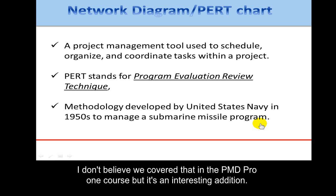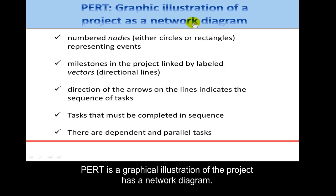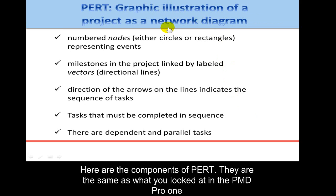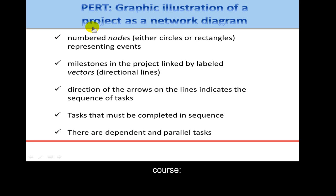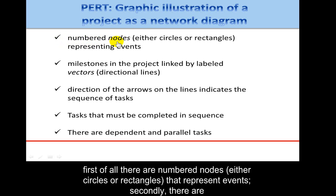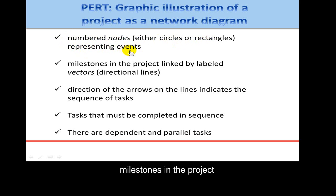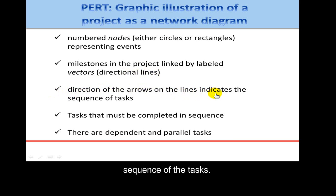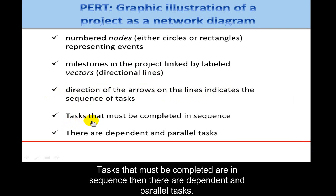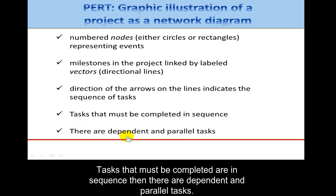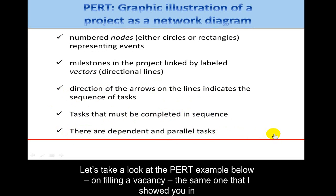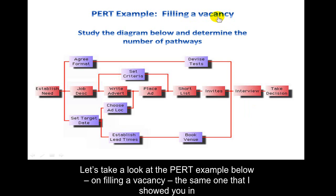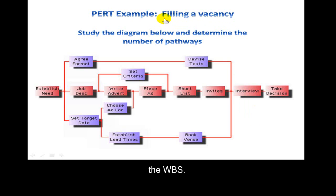PERT is a graphic illustration of the project as a network diagram. Its components — the same as what you looked at in the PMD Pro 1 course — include: numbered nodes, either circles or rectangles, that represent events; milestones linked by labeled vectors or directional lines; arrows that indicate the sequence of tasks that must be completed in sequence; and dependent and parallel tasks. Let's take a look at the PERT example for filling a vacancy — the same one shown in the WBS.